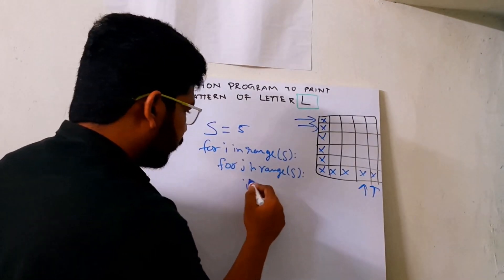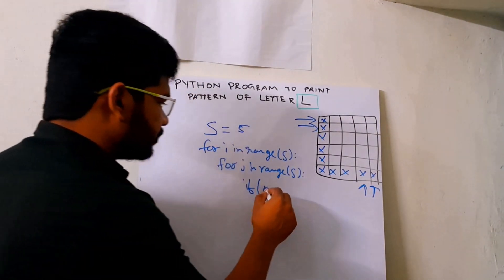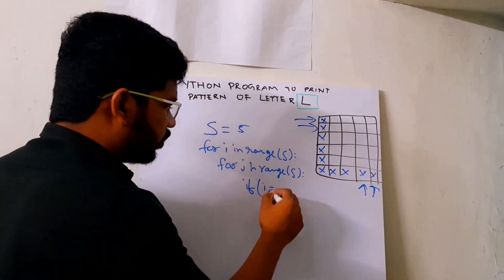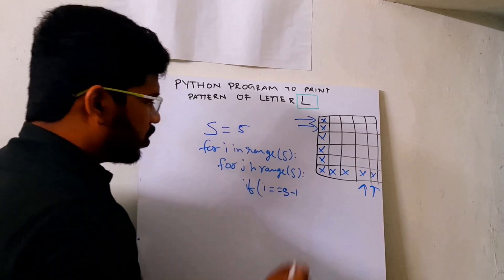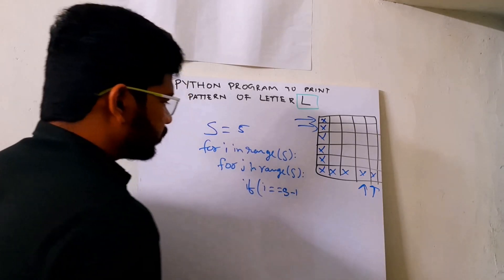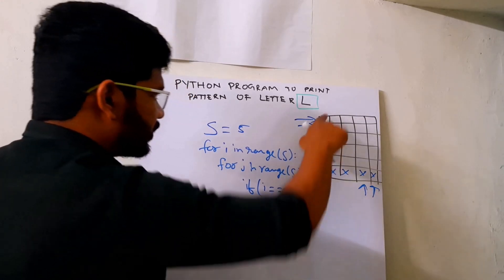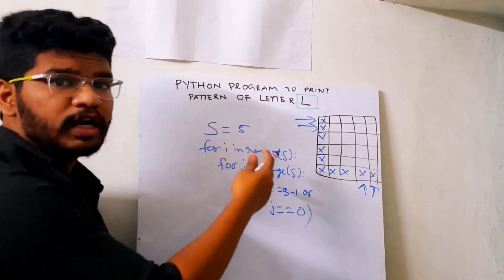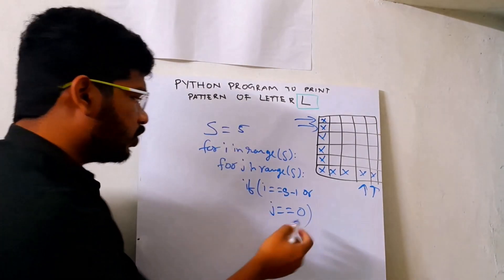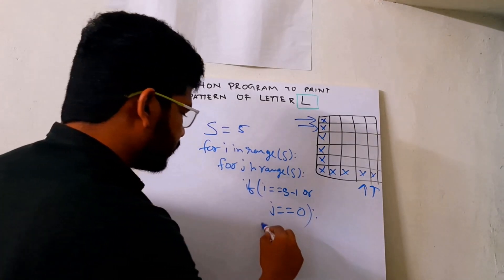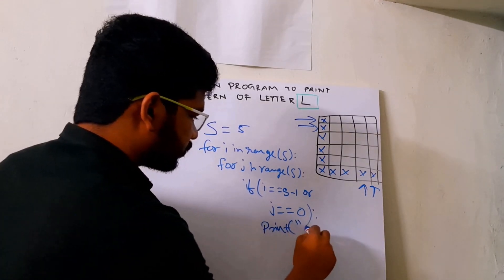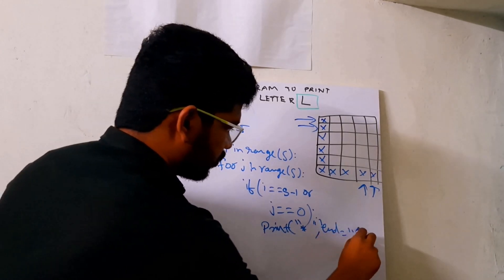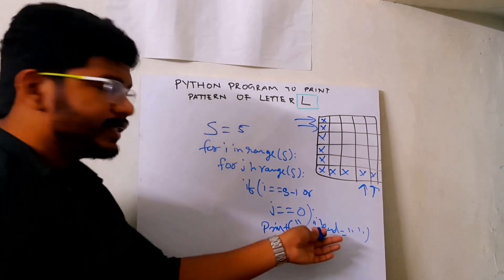Here I write the condition: if i is the last row — that is, i equal to s minus one — that is one condition. And we also write OR for the first column: j equal to zero, since columns start from zero. In these cases I will print stars.